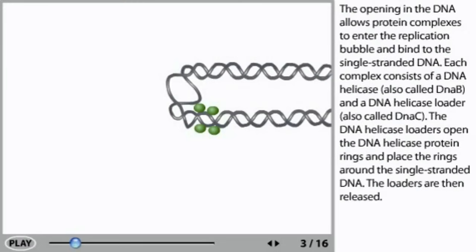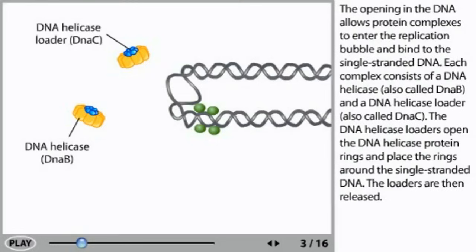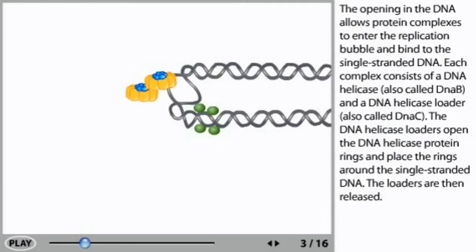The opening in the DNA allows protein complexes to enter the replication bubble and bind to the single-stranded DNA. Each complex consists of a DNA helicase, also called DnaB, and a DNA helicase loader, also called DnaC. The DNA helicase loaders open the DNA helicase protein rings and place the rings around the single-stranded DNA. The loaders are then released.